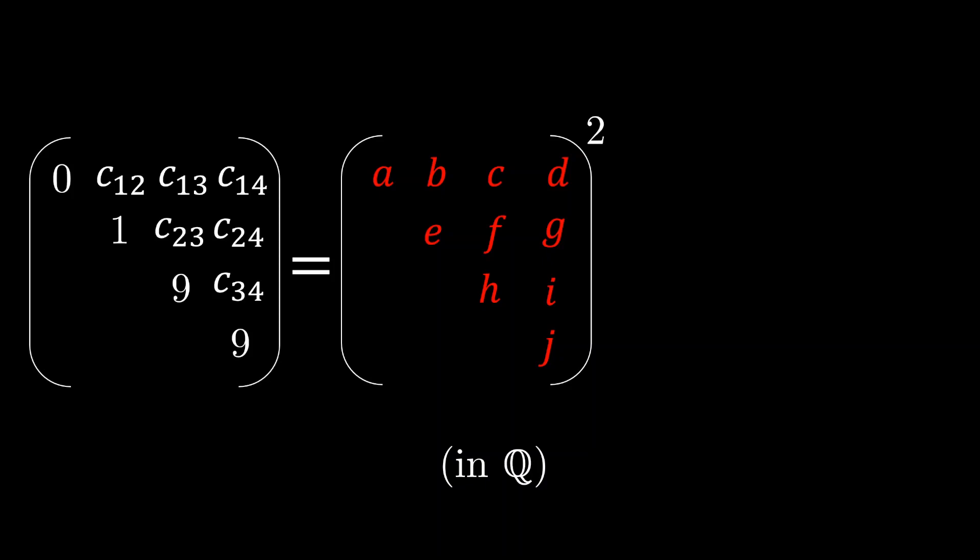Well, we already know how to find the terms on the main diagonal a, e, h, and j because we can just take the square roots of 0, 1, 9, and 9. So this is clearly solved for a, e, h, and j.